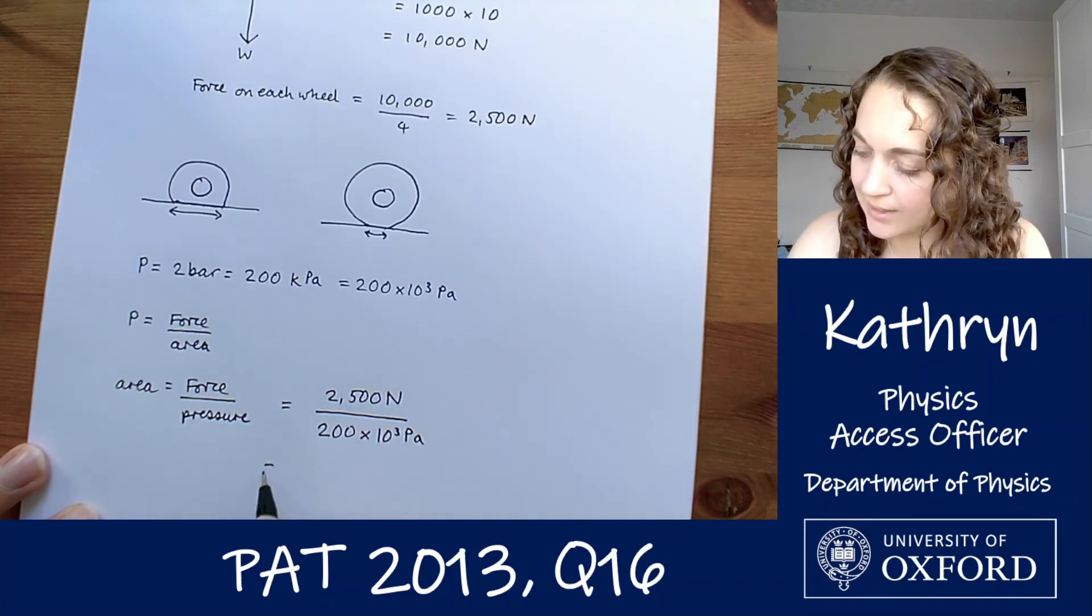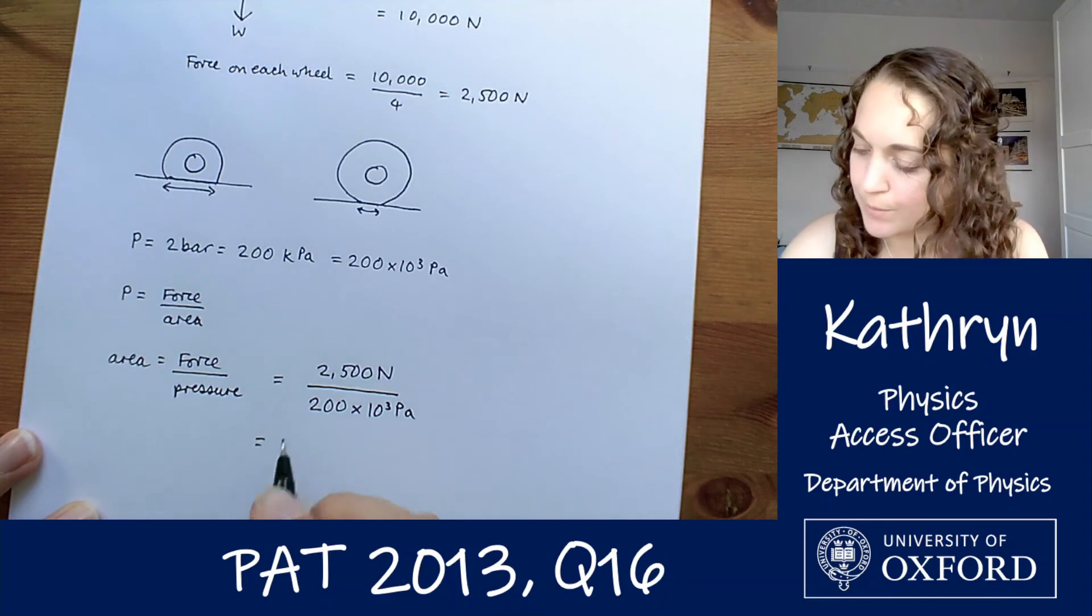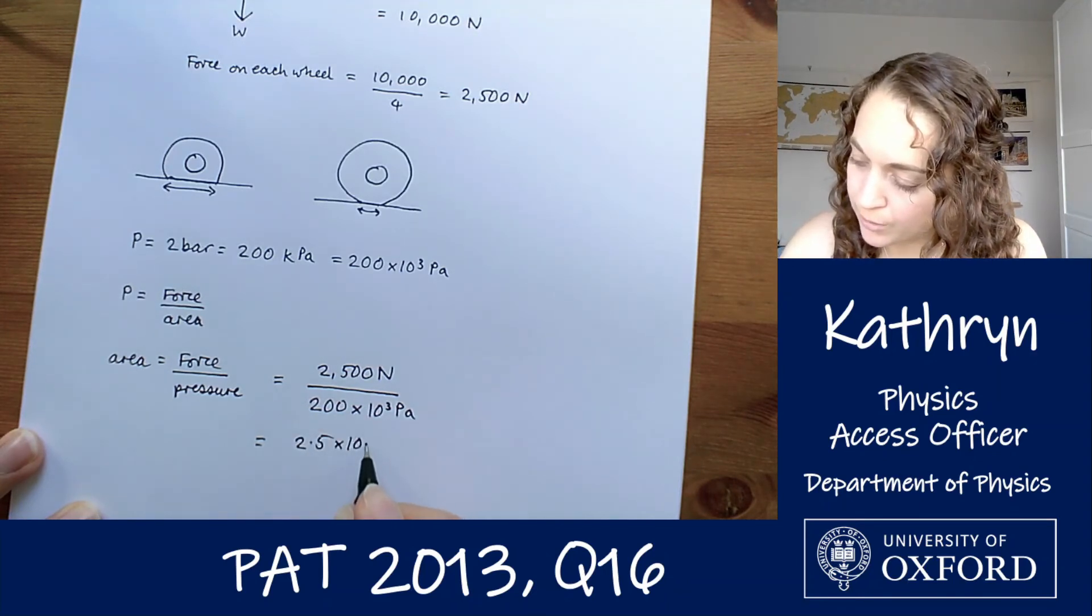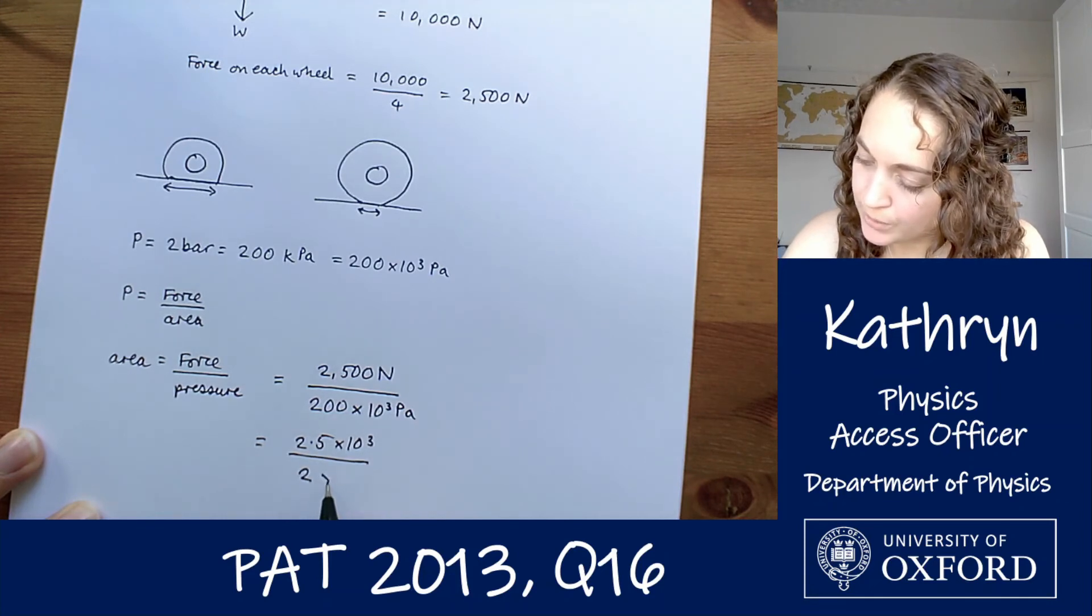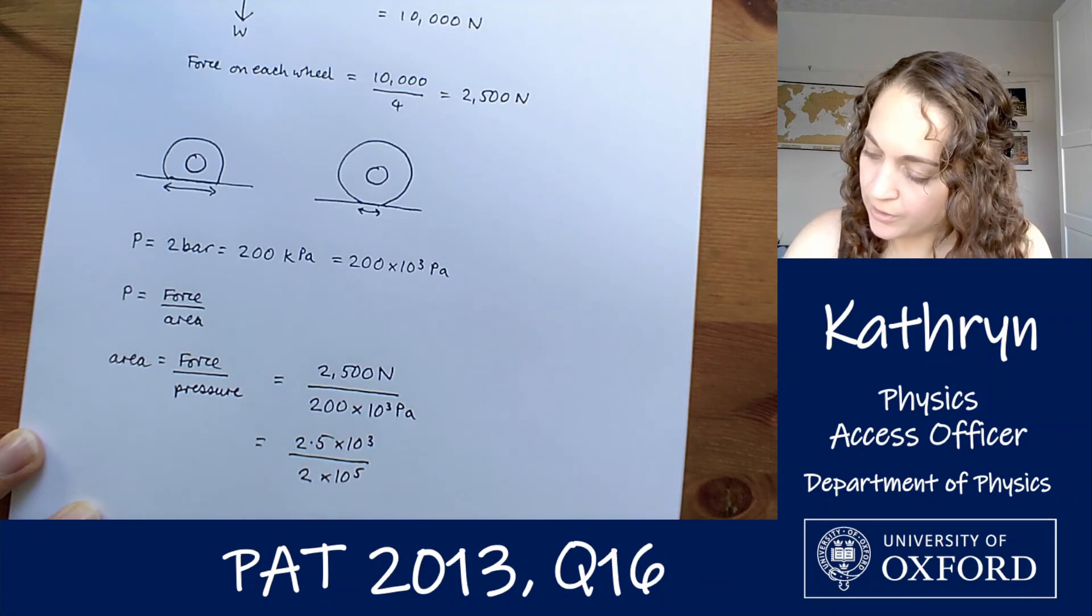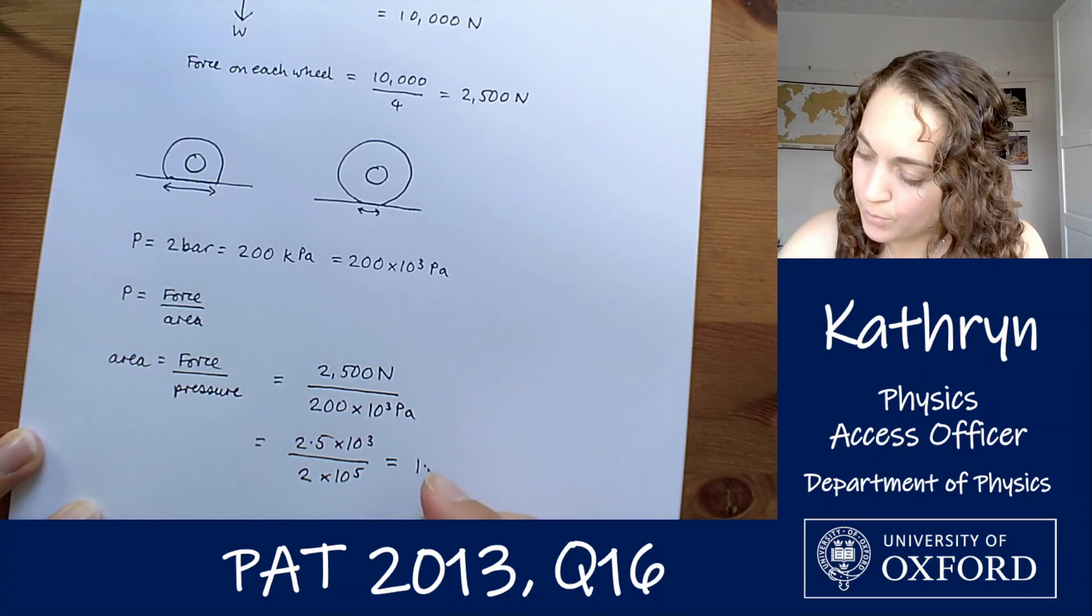So we just need to calculate that. Let's put them all in standard form. We've got 2.5 times 10 to the 3 divided by 2 times 10 to the 5, which is going to be 2.5 divided by 2 is 1.25.